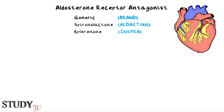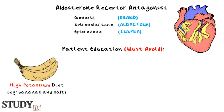Before I begin, I want to give a few key points to remember for patient education reasons that I believe will also help grasp the material throughout the video. First, patients on aldosterone receptor antagonist medications must avoid a high potassium diet. Examples of this can be bananas, nuts, and even salt substitutes.